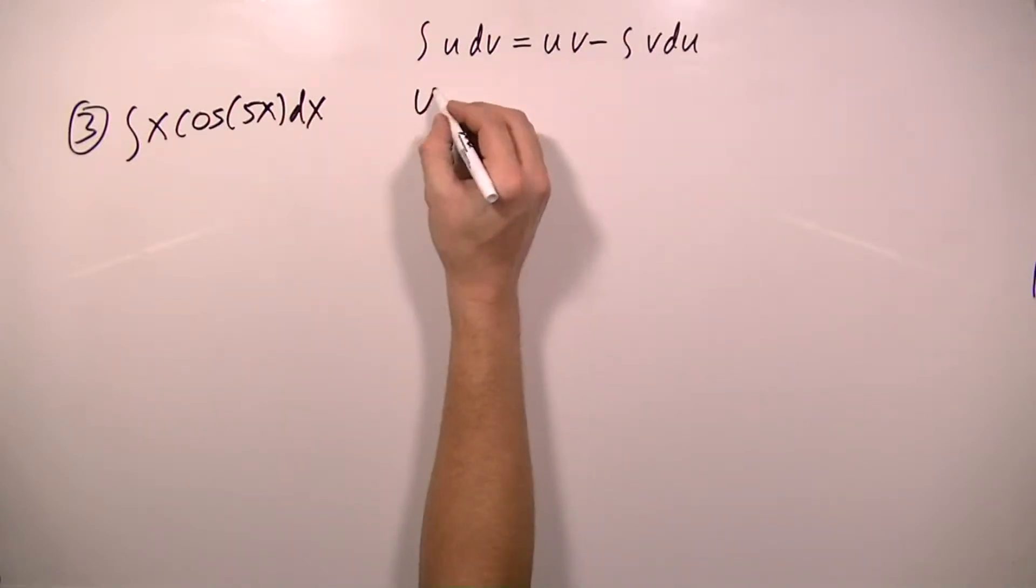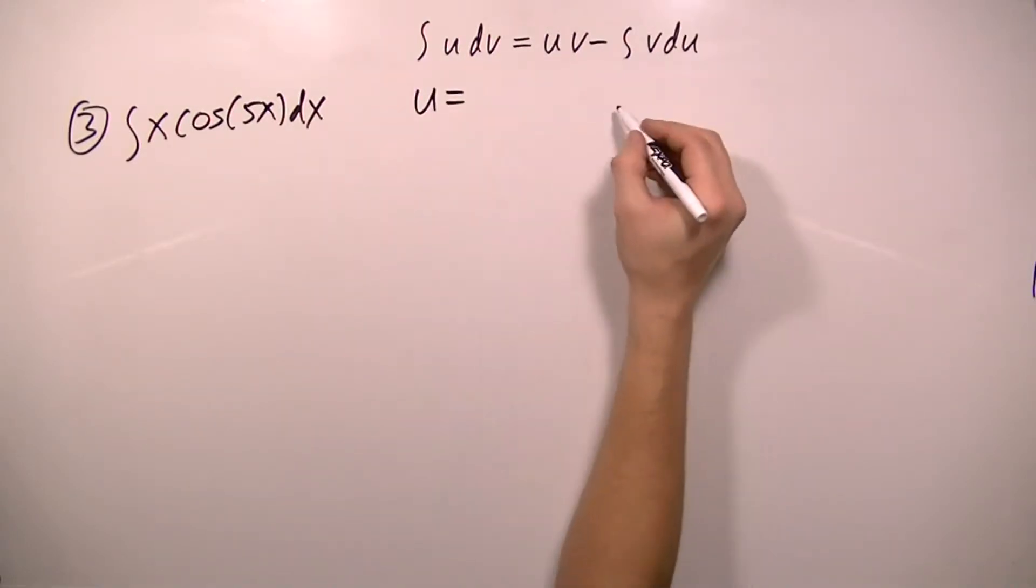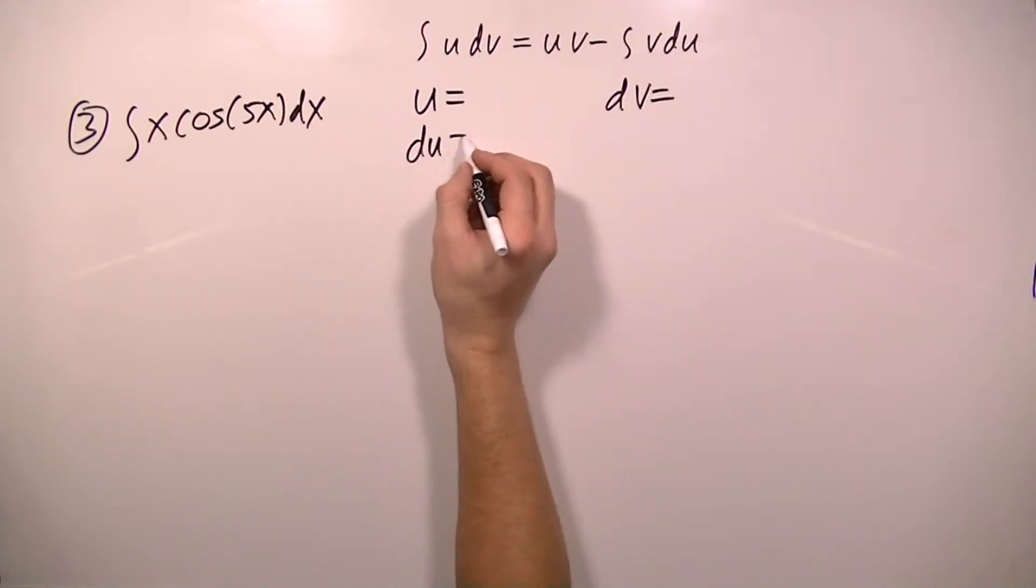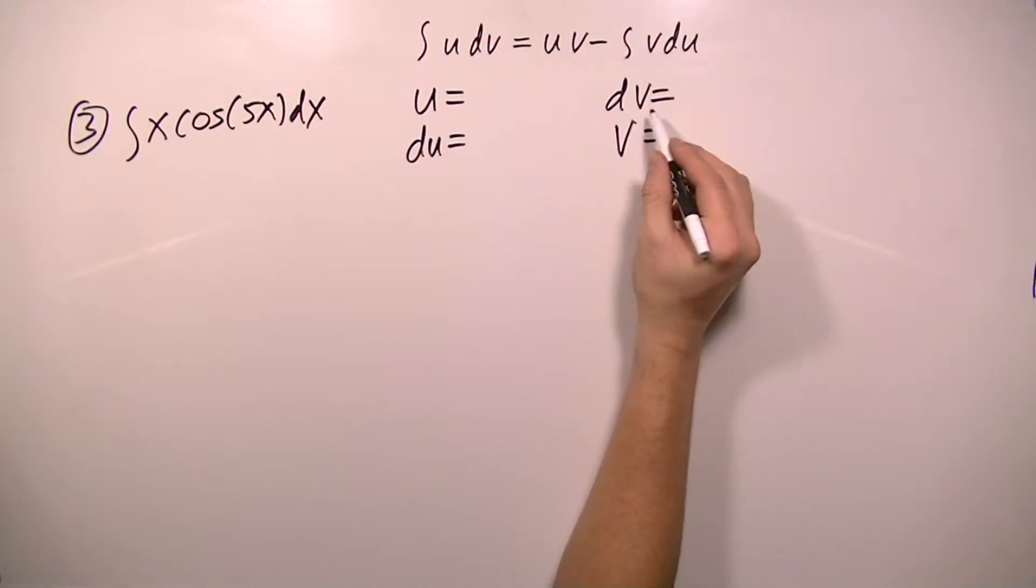Since this is integration by parts, we need to decide what we want to set equal to u, what we want to set equal to dv, and then we need to find the derivative of u and we need to find the integral of dv.